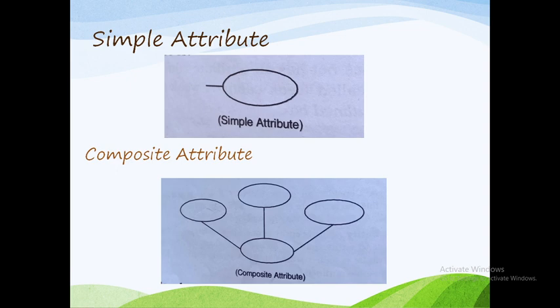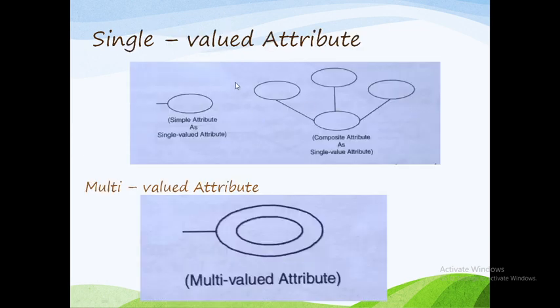An attribute that can be further subdivided into parts or components is called a composite attribute. The next type is single-valued attribute. A single-valued attribute can have only a single value. Single-valued attribute is similar to simple attribute. For example, a person can have only one date of birth or one age.